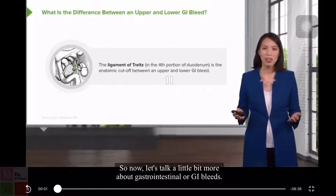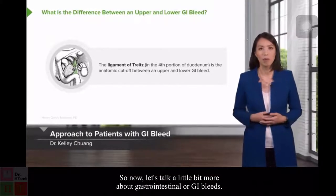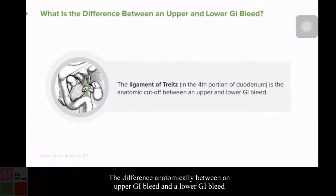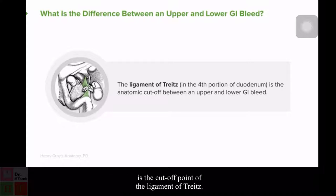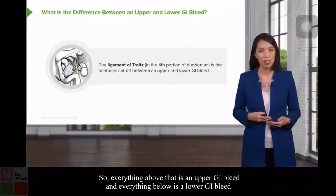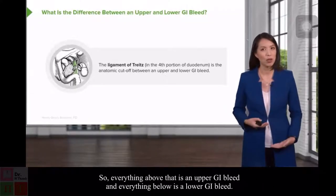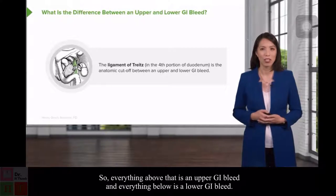Now let's talk a little bit more about gastrointestinal or GI bleeds. The anatomical difference between an upper GI bleed and a lower GI bleed is the cutoff point of the ligament of Treitz, which is in the fourth portion of the duodenum. Everything above that is an upper GI bleed, and everything below is a lower GI bleed.